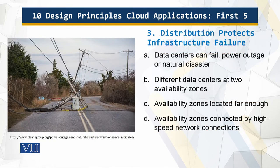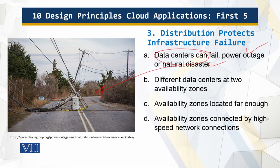The third principle: distribution protects against infrastructure failure. Here we are talking about entire data centers failing due to power outages or natural disasters. Having recognized the need to protect against resource failure and resolved to use multiple instances, that still doesn't help if a problem occurs at a higher level — such as an entire data center failing due to a power outage or natural disaster.